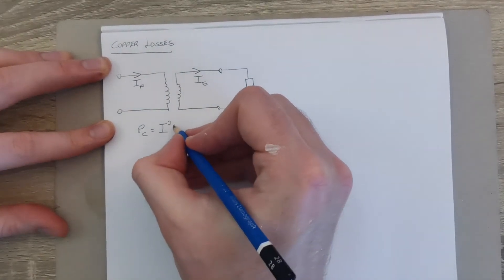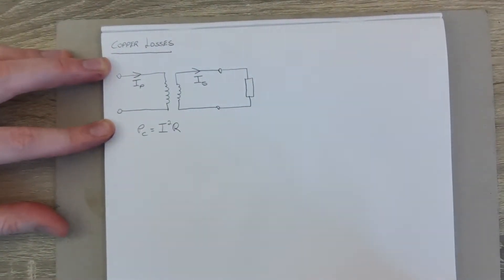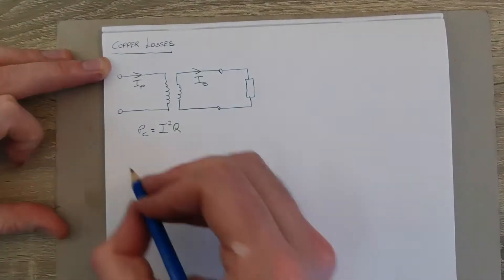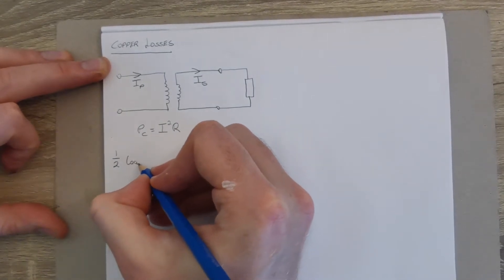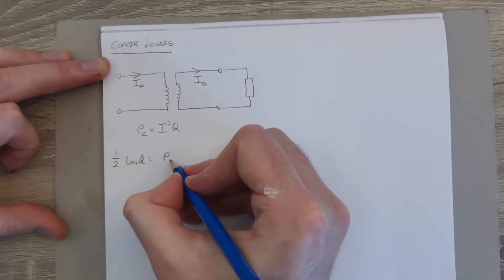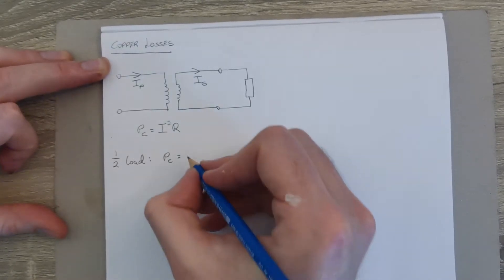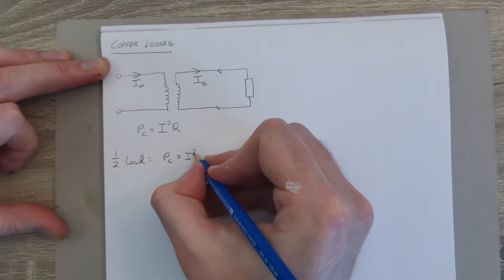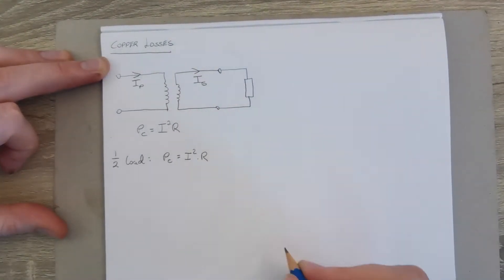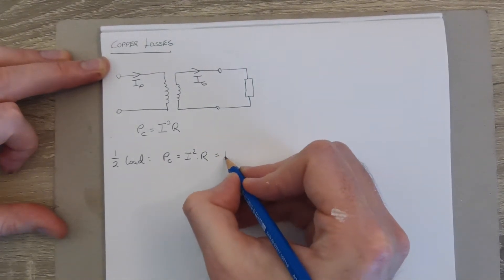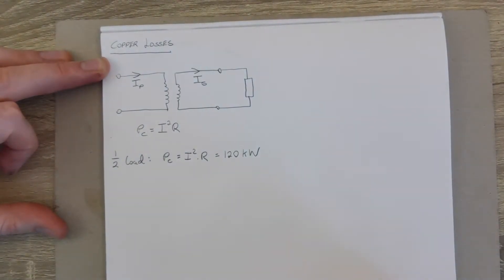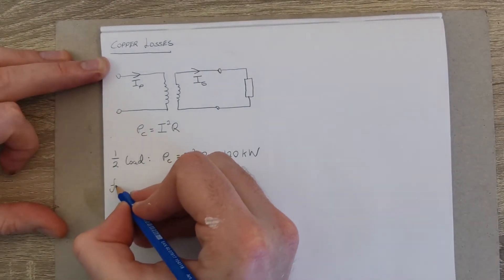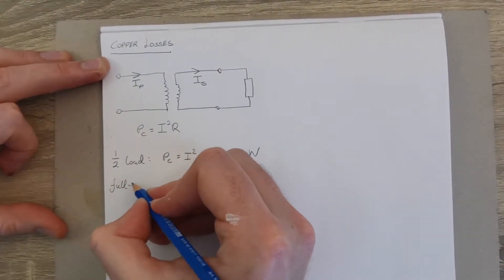The scenario you're given in this question is telling us that at half load, the copper losses, which will be whatever current is flowing squared times the resistance, is equal to 120 kilowatts. And it wants you to work out what will the full load copper losses be.